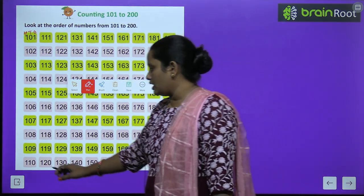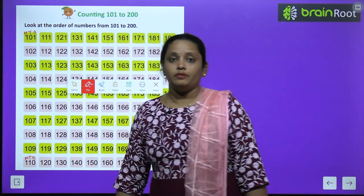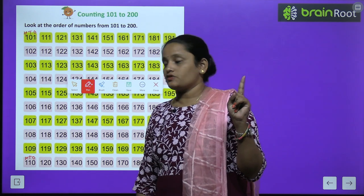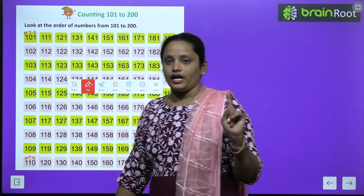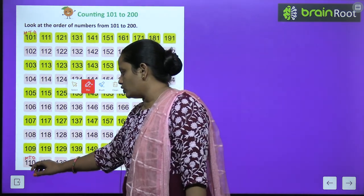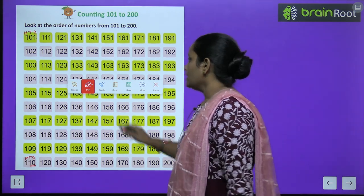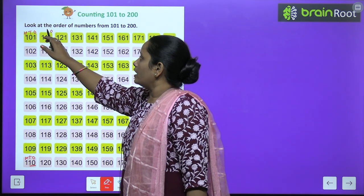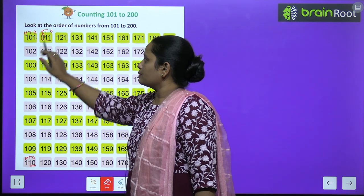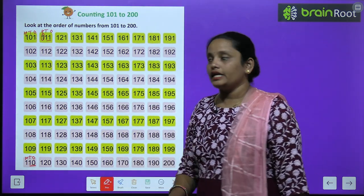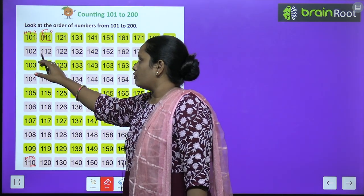How did we read those? 1's place, 10's place, 100's place. What is on the 100's place? 1 — so the 1 on the 100's place we call 100. Now if we remove that 100, what number is left? 1, 0 — that is 10. So we read it as 110. Next number: 100, and after removing that 100 what remains? 11. So we read it as 111.